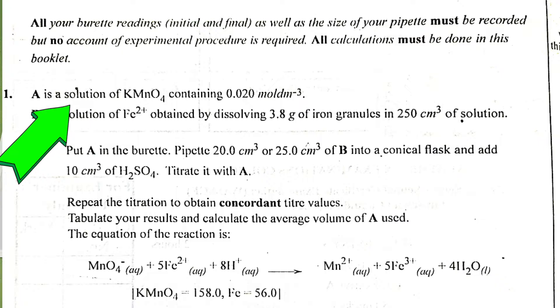Question number one. A is a solution of KMnO4 containing 0.020 moles per dm³. That's the concentration of A. B is a solution of Fe²⁺, obtained by dissolving 3.8 grams of iron granules in 2.5 cm³ of solution. Put A in the burette. Your pipette might be 20.0 cm³ or 25.0 cm³ of B into a conical flask and add 10 cm³ of H2SO4. Titrate it with A. Repeat the titration to obtain concordant titre values. Calculate the average volume of A used. The equation of the reaction is MnO4⁻. You can see the equation of the reaction there.